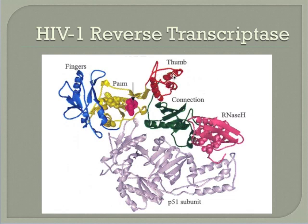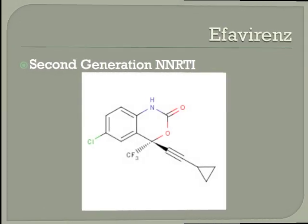In addition, p66 contains an RNase H domain and a connection domain. The connection domain serves as a bridge between the two subunits, while RNase H removes the RNA from the DNA-RNA hybrid. The p51 subunit is identical in composition to the p66, except it lacks a C-terminal RNase domain. This results in a closed conformation and absence of catalytic activity, giving it more of a structural role for the protein.